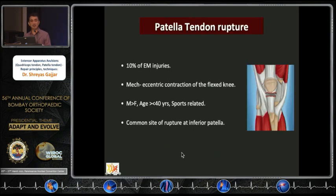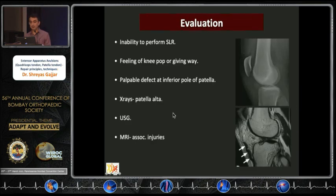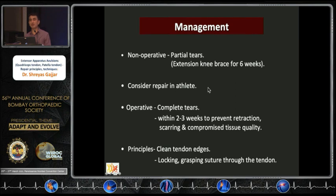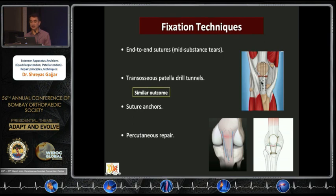Patellar tendon tears account for 10% of extensor mechanism injuries, typically in patients under 40 years old and importantly sports-related. The commonest site is the inferior pole of the patella. Clinical examination is important — inability to perform a straight leg raise, a palpable defect, and patella alta on imaging. Ultrasound and MRI are important modalities; there is a higher incidence of associated injuries compared to the quadriceps tendon group. Fixation techniques include trans-osseous patella tunnel, internal braces with high-strength sutures, percutaneous repairs, and the AO technique with a screw through the tibia and a strong suture or cerclage wire.